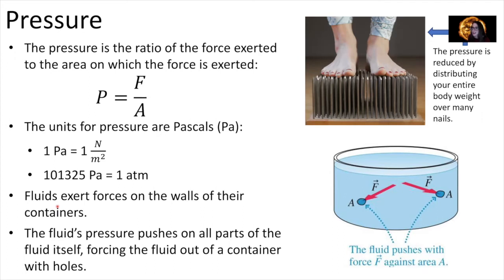A classic example is the bed of nails experiment — why can you lay on a bed of nails and not get impaled? If you put all your weight onto one nail, you have a large force over the tiny cross-sectional area of that nail tip, resulting in very high pressure. But if you fill a board with many nails, you spread that same force over a much larger area, which greatly reduces the pressure — that's how you survive a bed of nails.